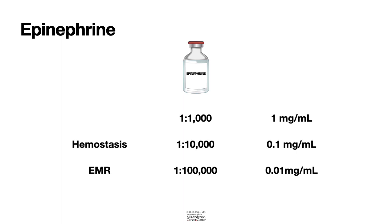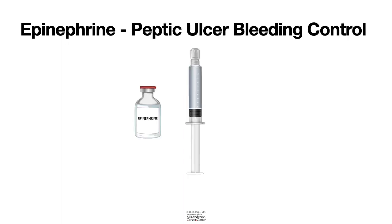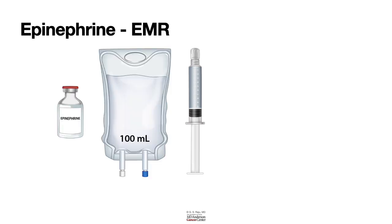Let us learn about epinephrine injection for peptic ulcer bleeding control. For EMR, especially large EMR, you need to take a 100 cc saline bag and add epinephrine to create a dilution of 1 in 100,000. Some endoscopists go further and create a dilution of 1 in 200,000.